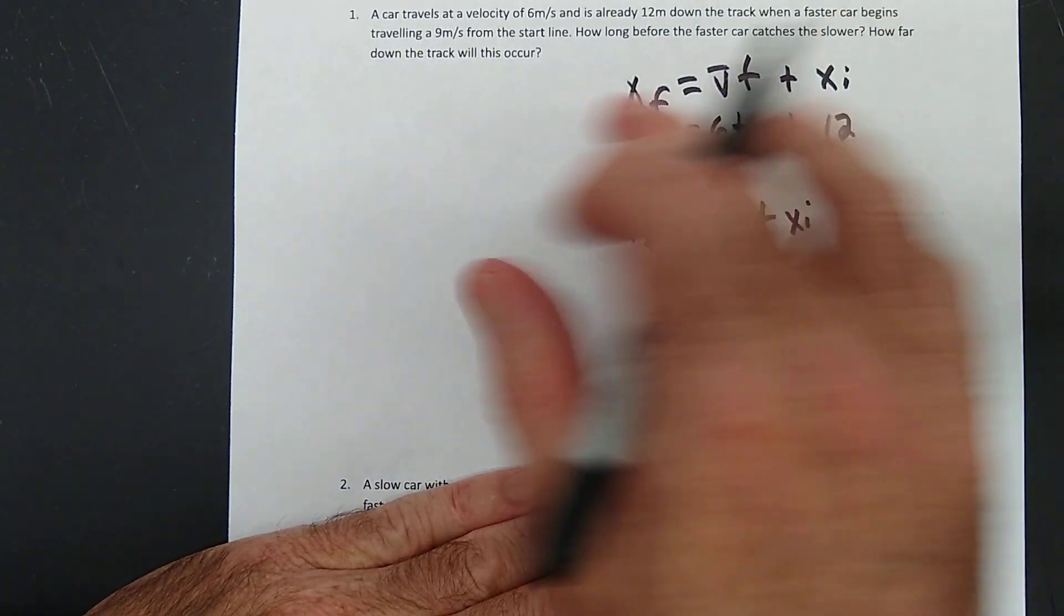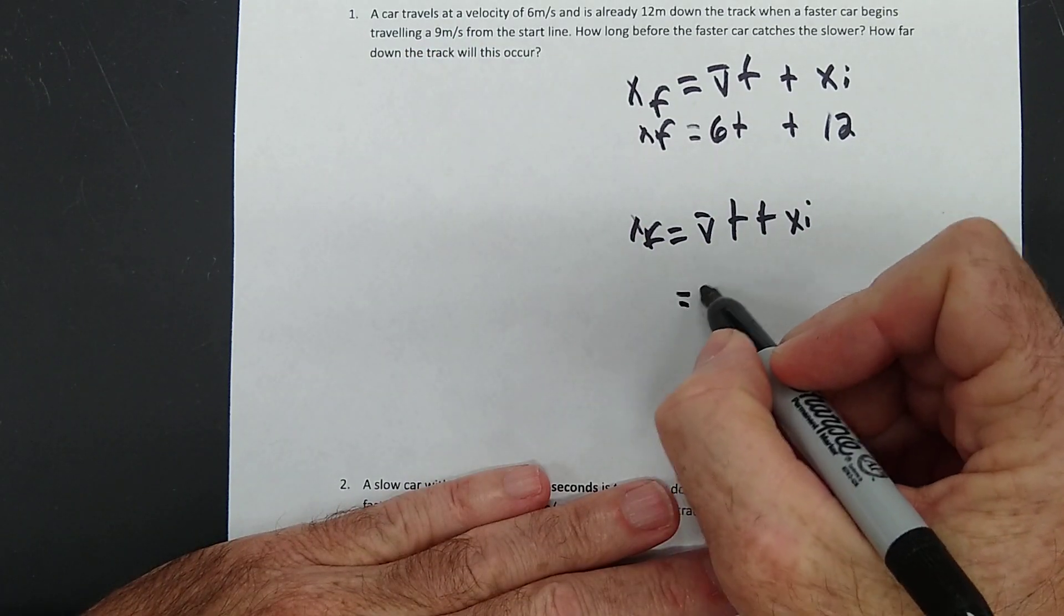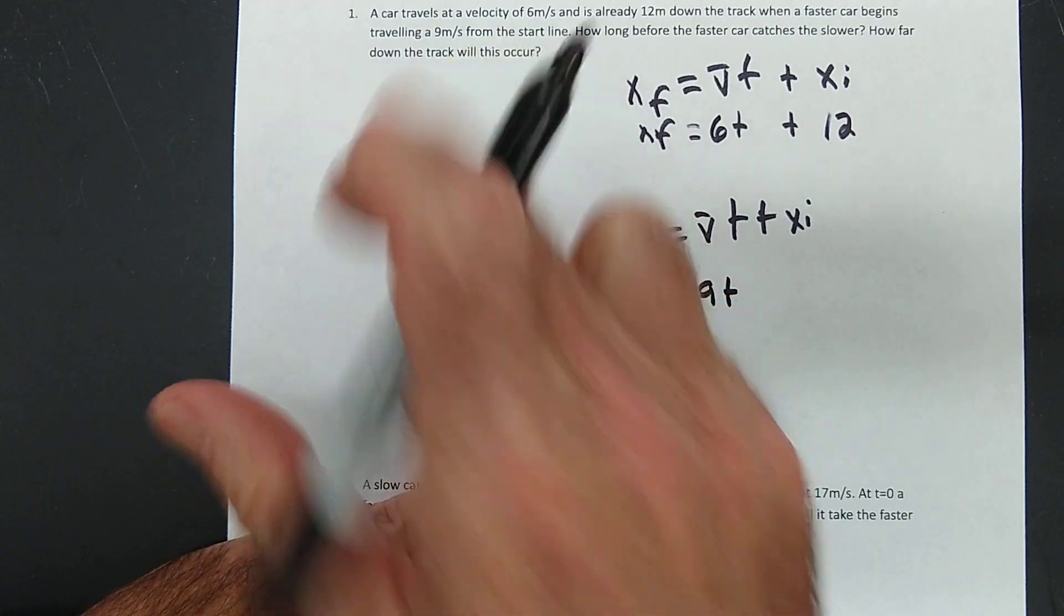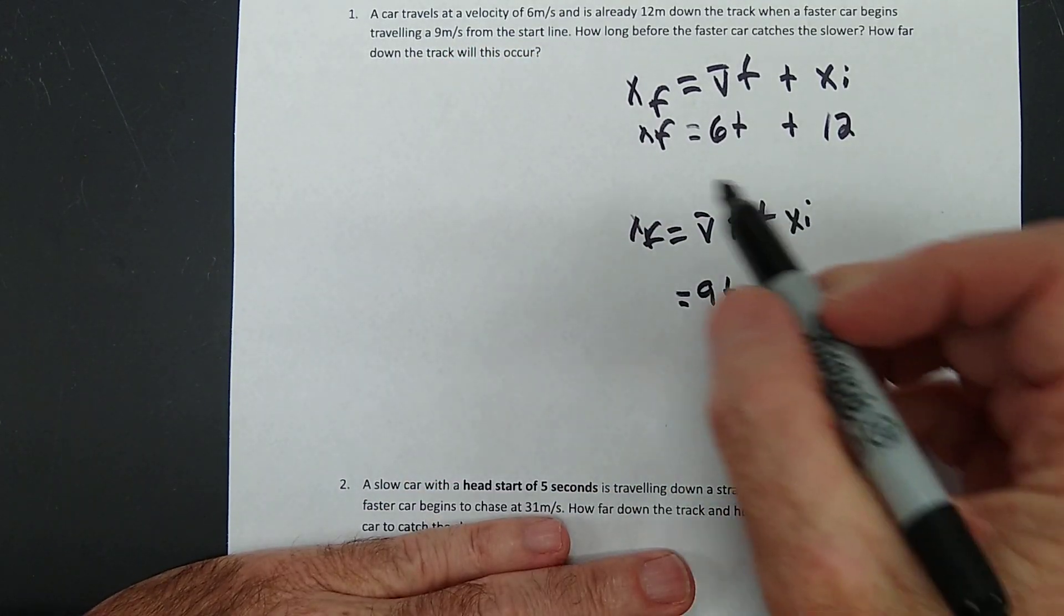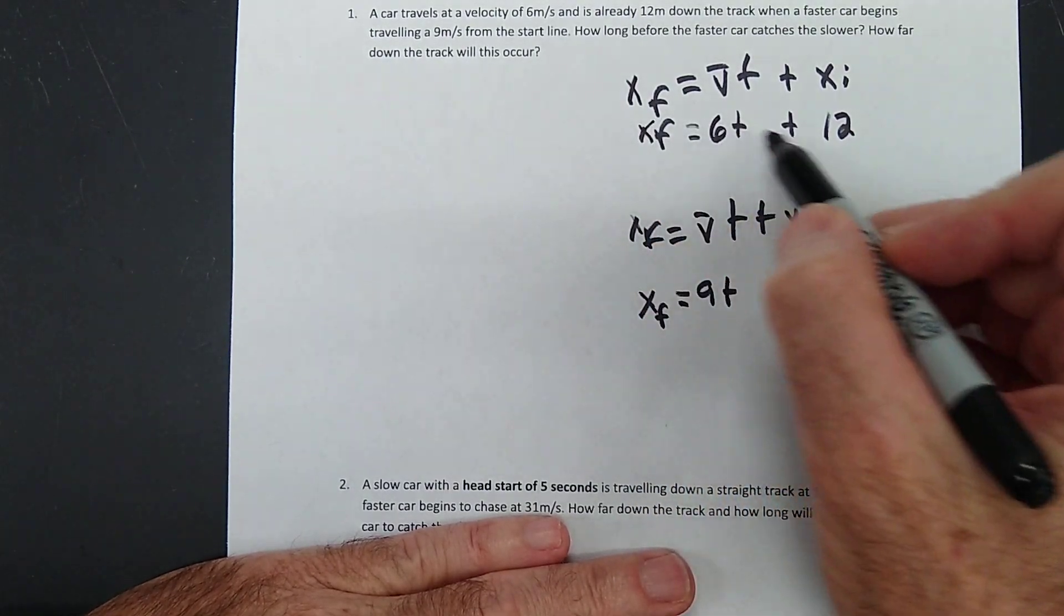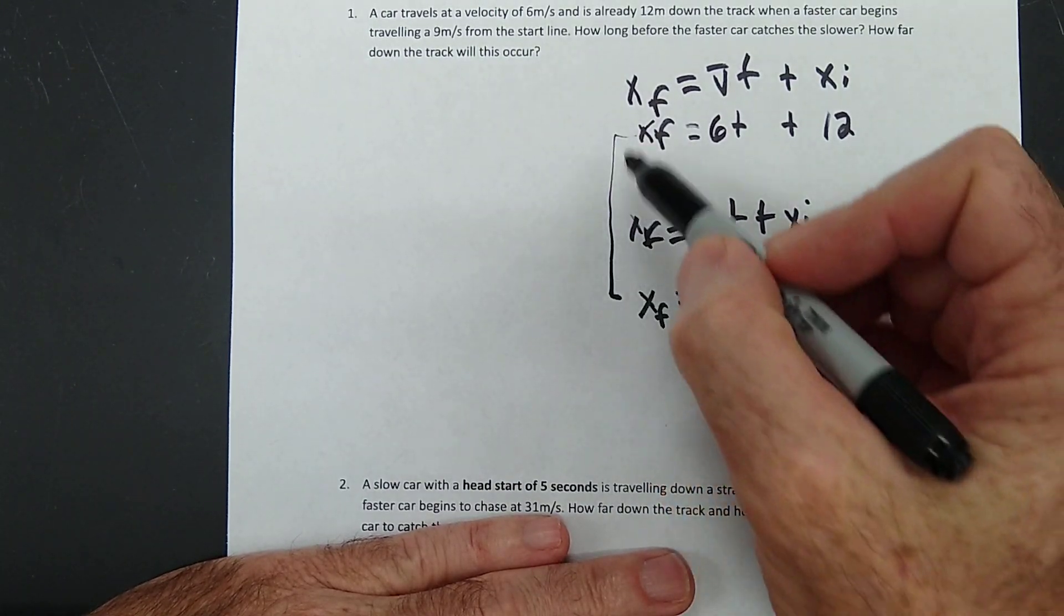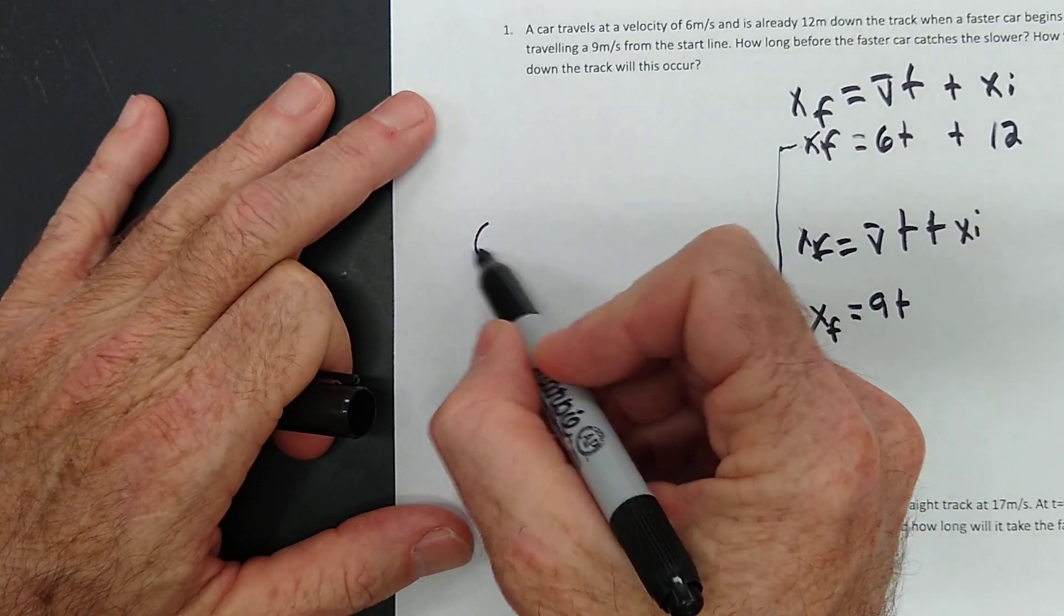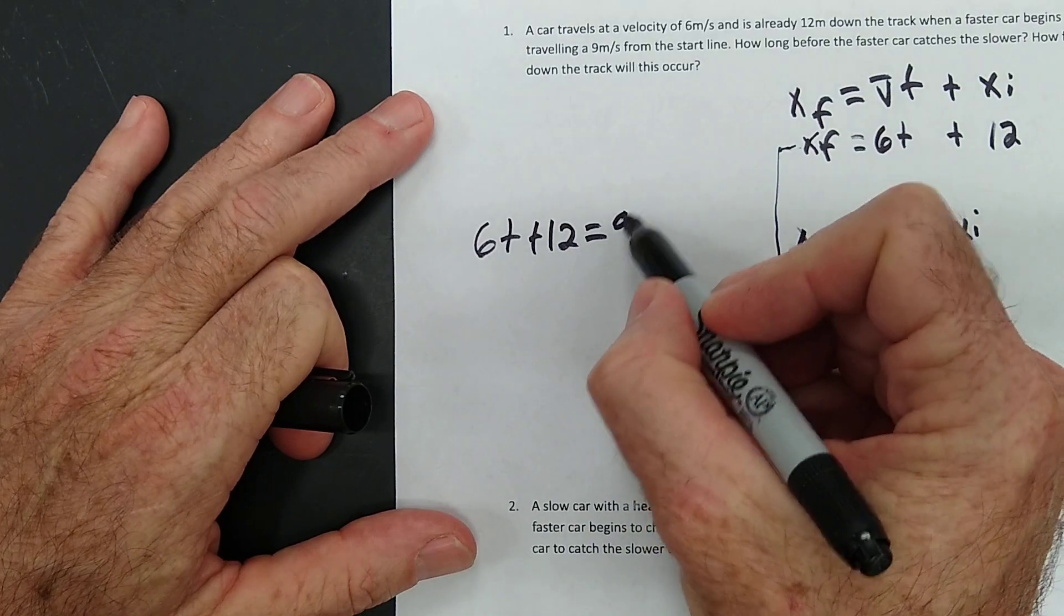Now, the other car is traveling at 9 meters per second, so its velocity is 9 for a certain amount of time. And it began from the starting line, so there is no initial distance. So if XF is equal to 9T, XF is equal to 6T plus 12, when these cars catch each other, they'll have the same XF. So we can very simply say 6T plus 12 equals 9T.